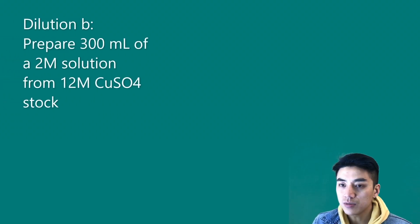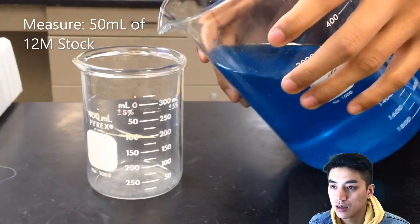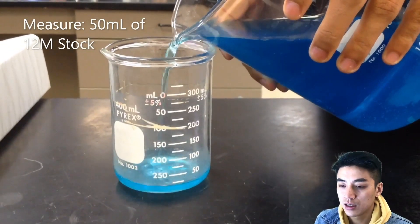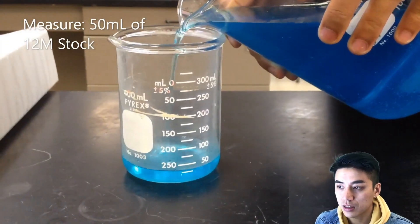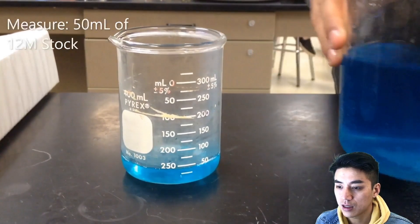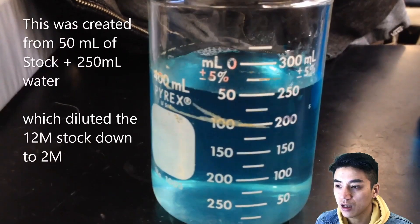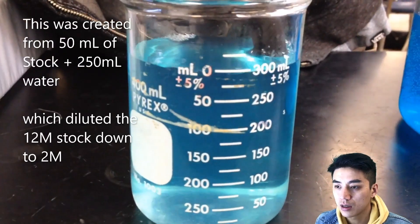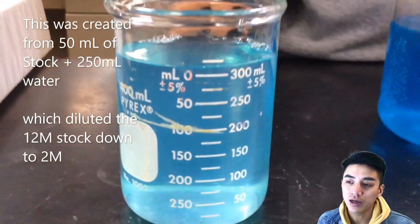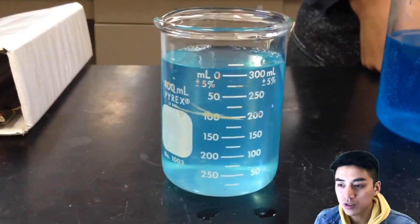Okay, dilution B. So make sure you look on your notes again. This one is prepare 300 mils of a 2 molar solution. We'll see what it looks like first and then I'll show you how to get the numbers. It will be 50 mils of the stock. That's our original stock solution. And the remainder is just water, and you fill it so that it reaches the 300 milliliter mark. He went slightly over, that's okay, just pretend it's 300.